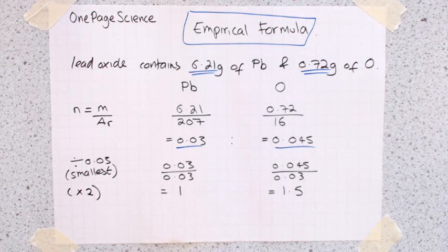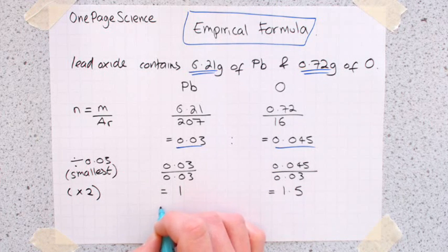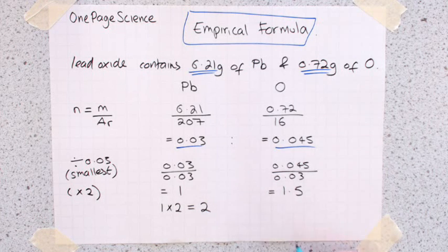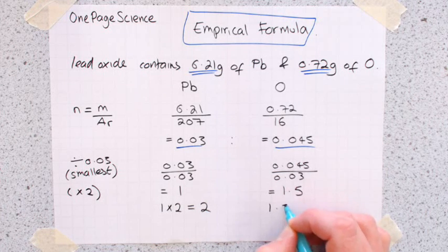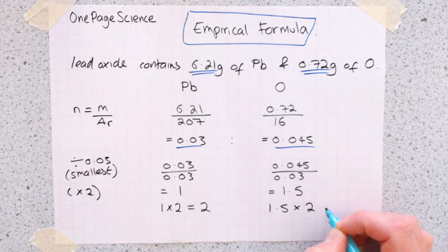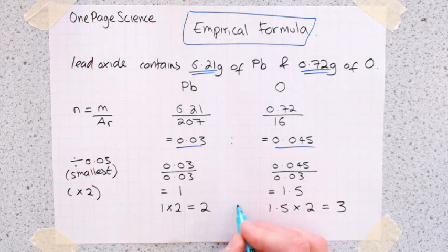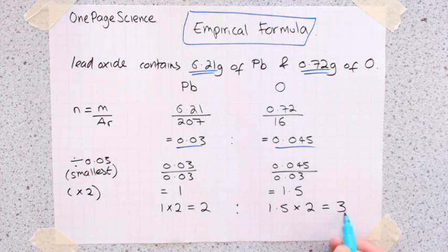We get 1 times 2, which equals 2. And over this side, 1.5 times 2, which equals 3. And that then is the simplest whole number ratio. So this is our ratio now, 2 to 3.